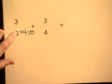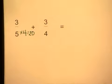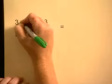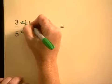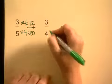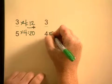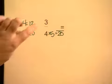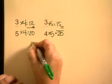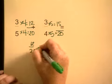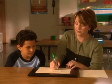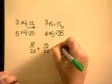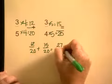If we do it to the denominator, we have to do it to the numerator. So what's 3 times 4? 12. So we have 12 twentieths. What's 4 times 5? 20. And 3 times 5 is 15. So now we have 12 twentieths plus 15 twentieths. What's 12 plus 15? 27. 27 twentieths.